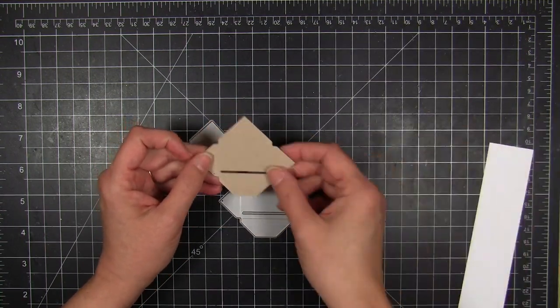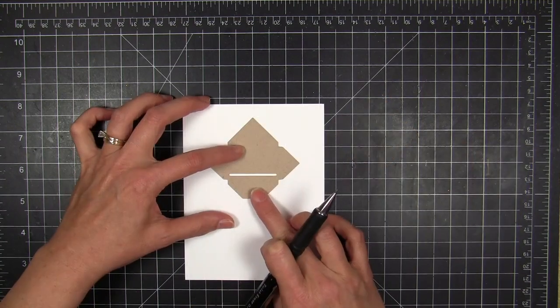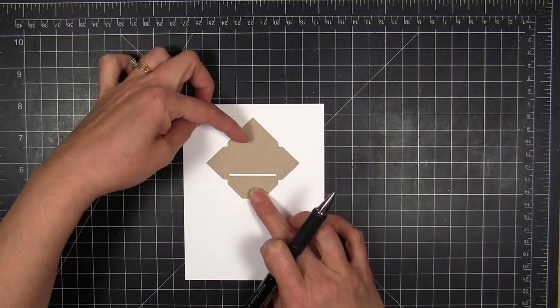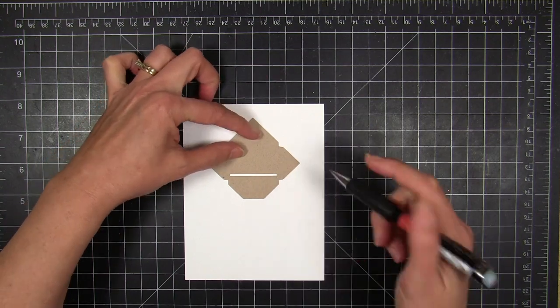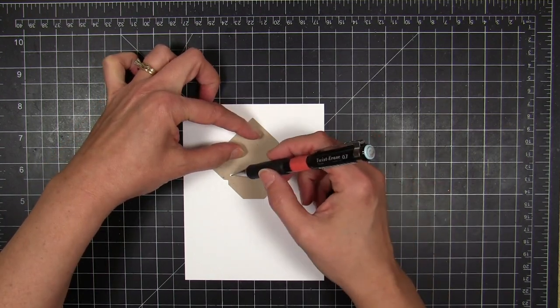Now to show you how this works, I'm going to take the die cut envelope and position it where it's going to end up on my finished card.